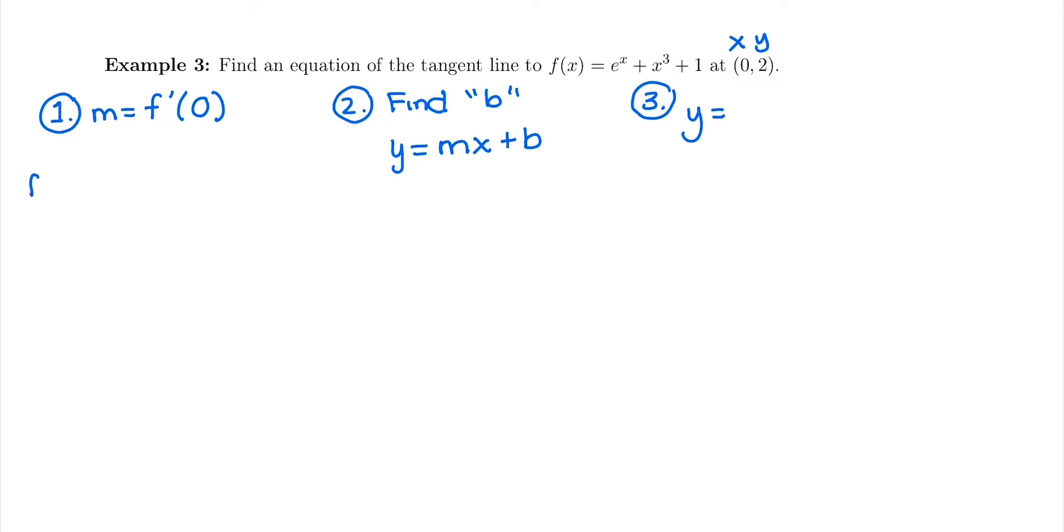I'm going to jump in and take the derivative as my first step of this function here. So derivative of e to the x is e to the x. Derivative of x cubed, bring down that power, I get 3x squared. Bring down the power, subtract one for the new power. And then the derivative of 1 is 0.